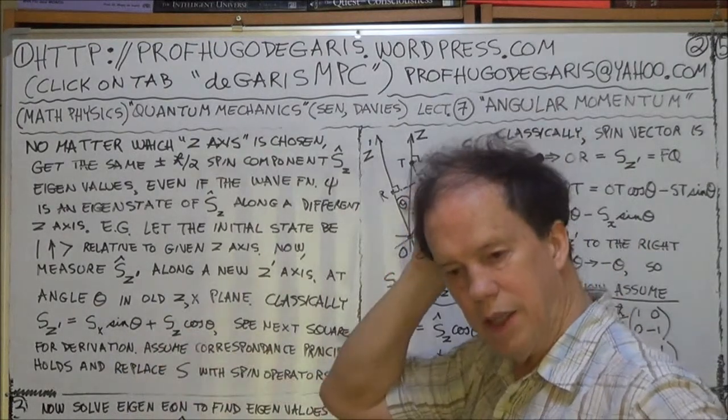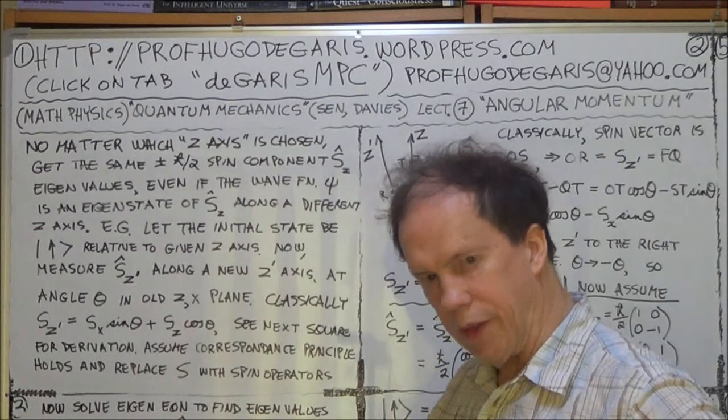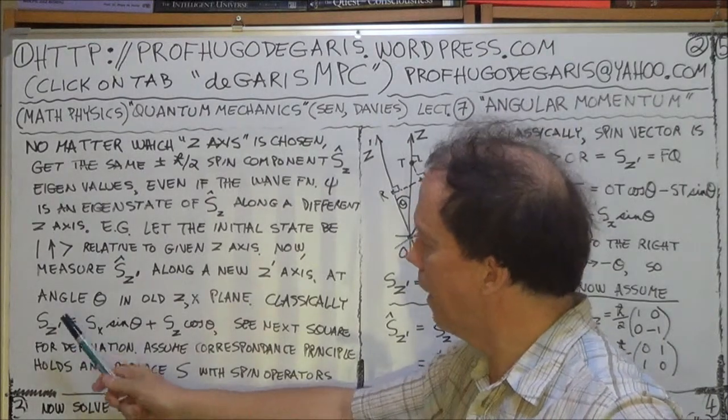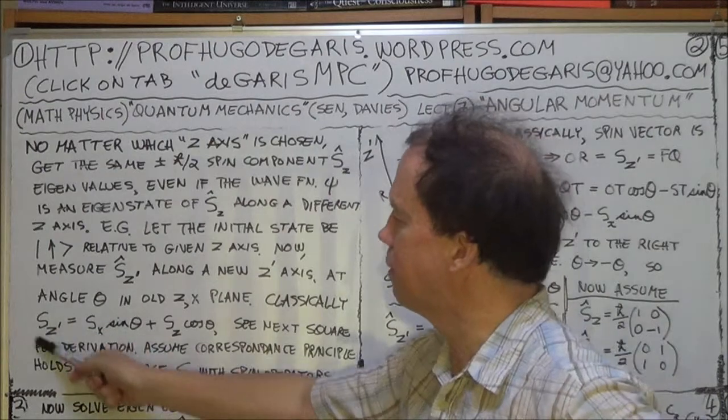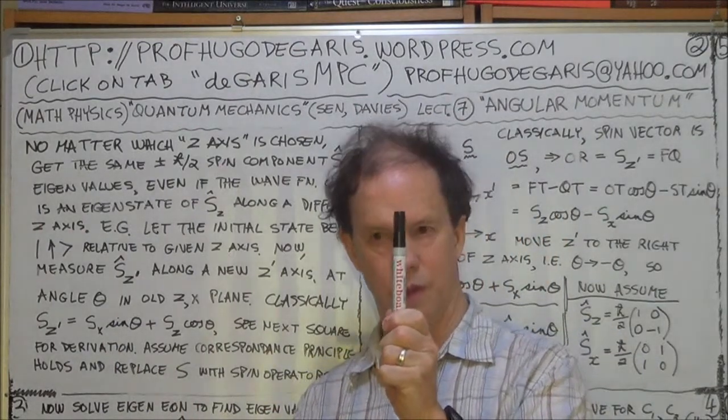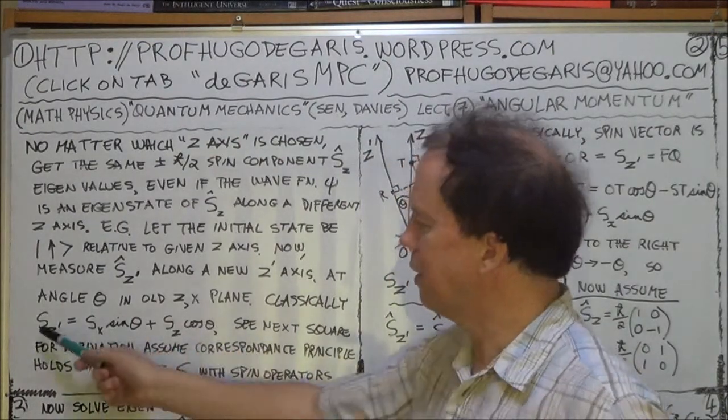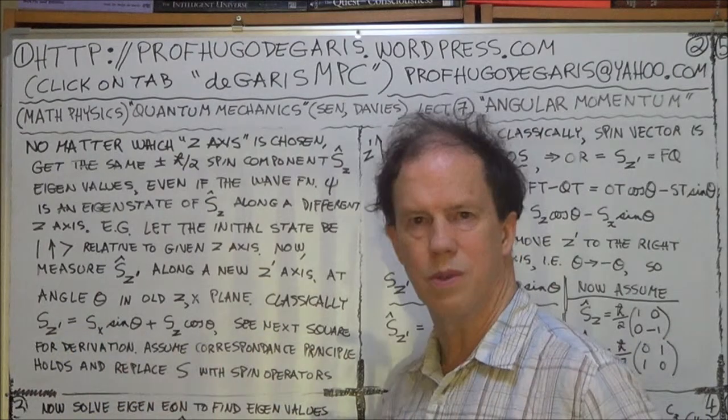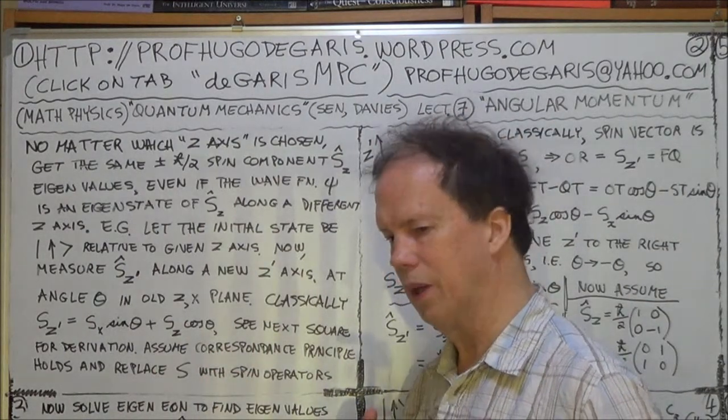Now think classically, think classical mechanics and in terms of the angular momentum in classical mechanics. So we want a formula for the z-dashed component of the spin in terms of the components for your original measurement when the z-axis was vertical. Now in classical terms it's this. Now I had to really scratch my head for a while and so the next square I'll actually derive this because it was non-trivial.